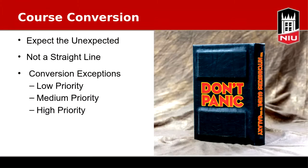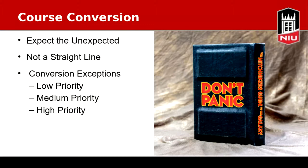In some of these conversions, especially for courses that have been around a while and are heavily nested, when you convert you'll sometimes see a lot of conversion exceptions. It's important to look into those, but keep in mind that some exceptions are not really a big deal — especially the low priority ones, which tend to deal with appearance, formatting changes, or slight feature limitations. For example, if you have empty discussion forums in your original course, converting to Ultra will simply remove those empty forums and throw a conversion exception.